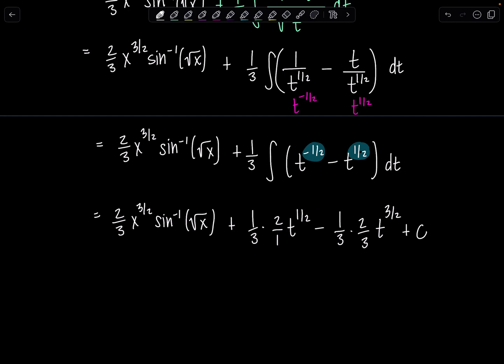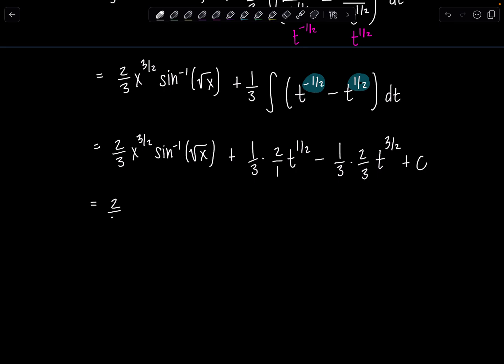And then let's just go back. Remember, t was equal to 1 minus x. So let's go back to the original variable. 2 thirds x to the 3 halves sine inverse of rad x, plus 2 thirds. t was 1 minus x to the 1 half, minus 2 ninths. t was 1 minus x to the 3 halves, plus c. Et voila.